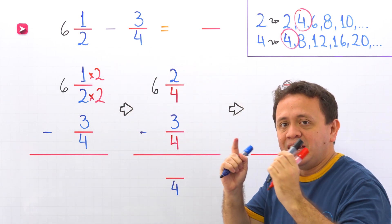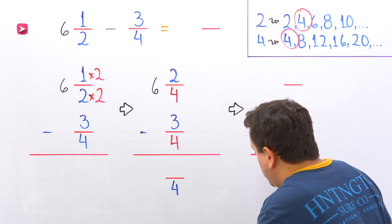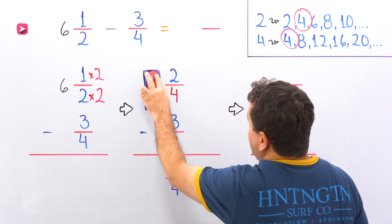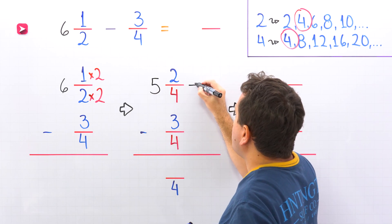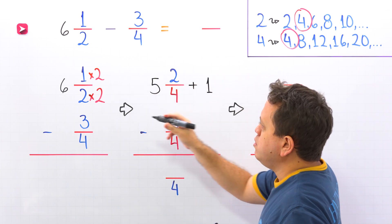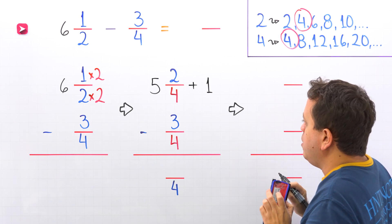So, in this case, we need to regroup. Pay attention, because we're going to write 6 as 5 plus 1. 5 plus 1 is equal to 6, so we don't have any problem over here.